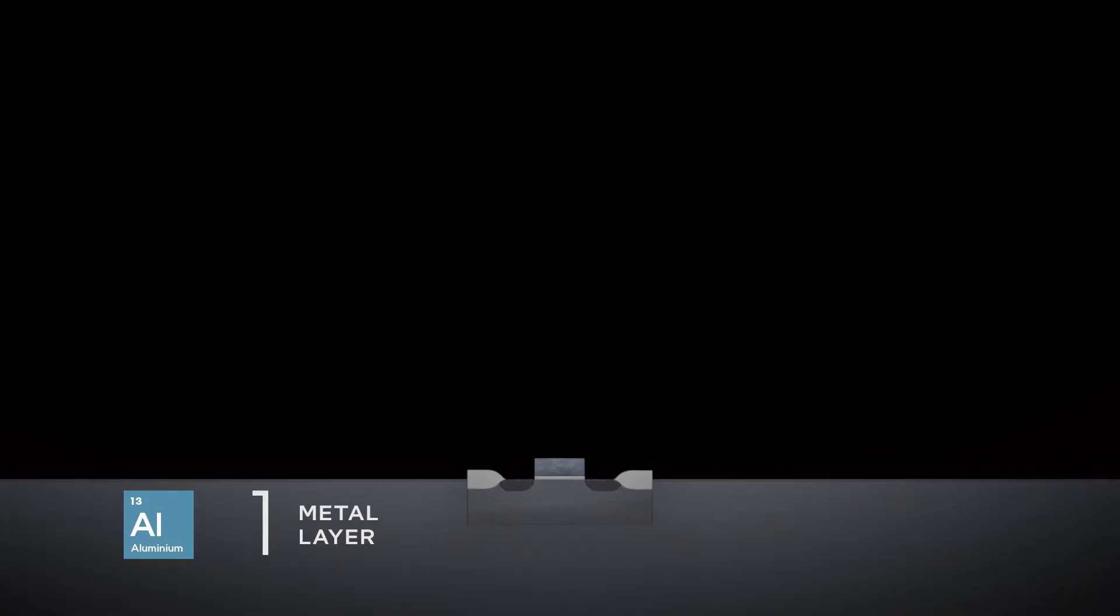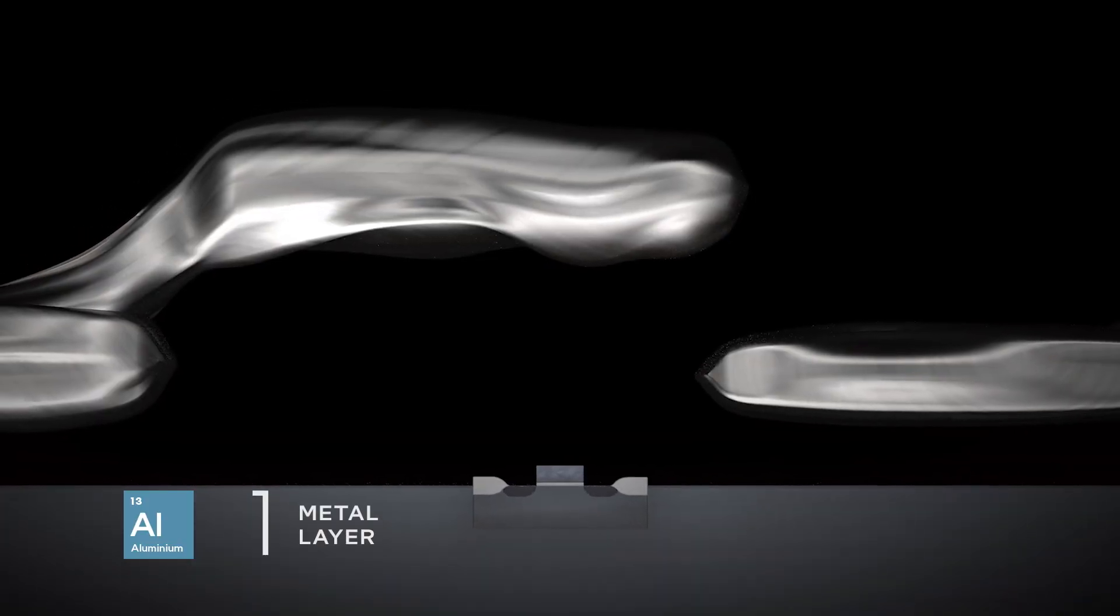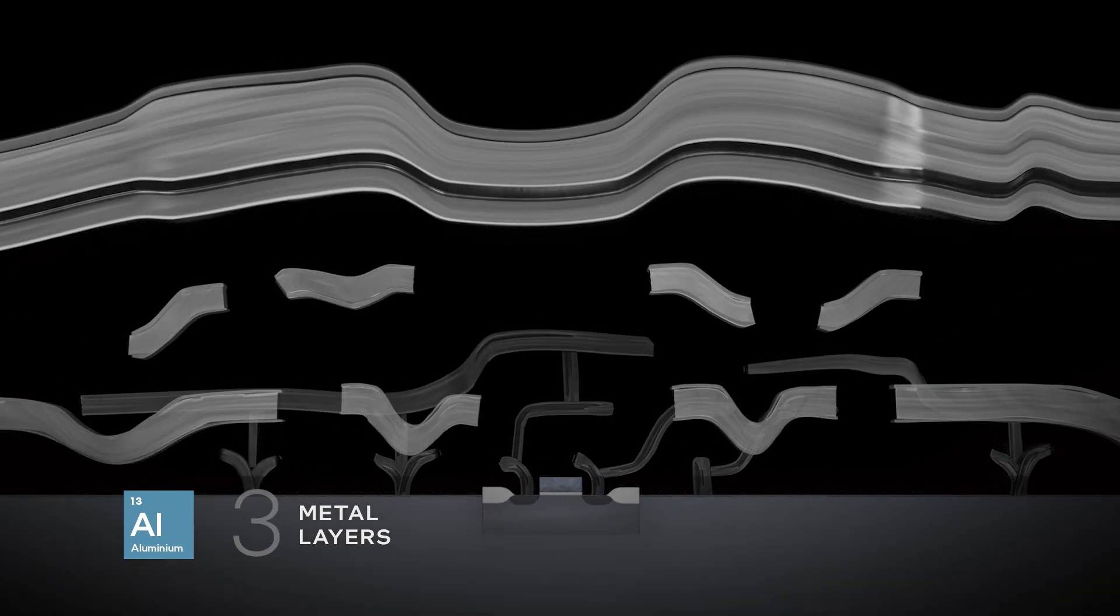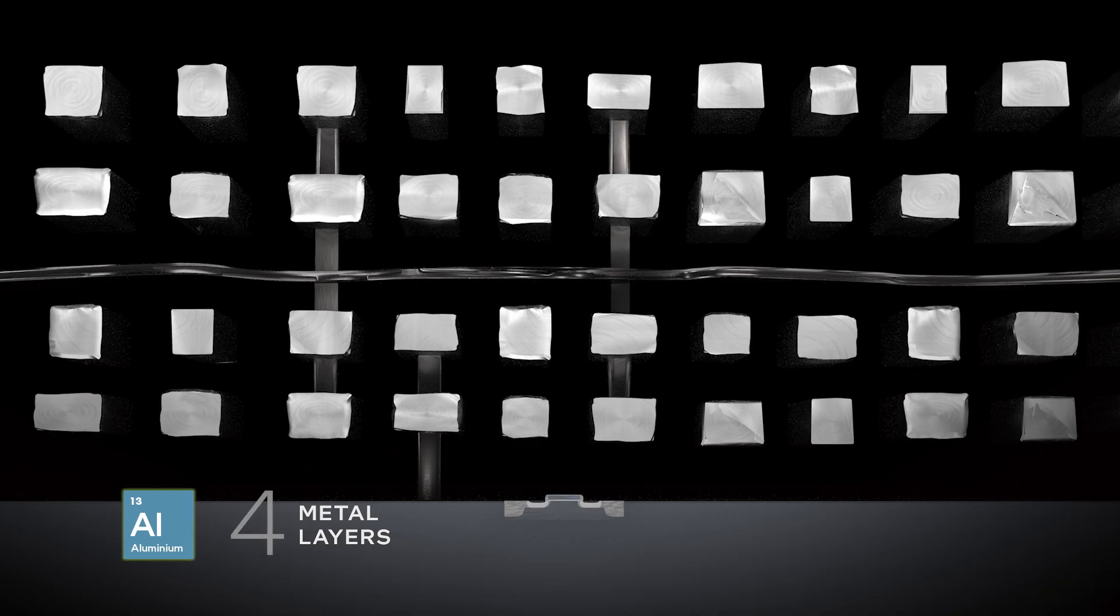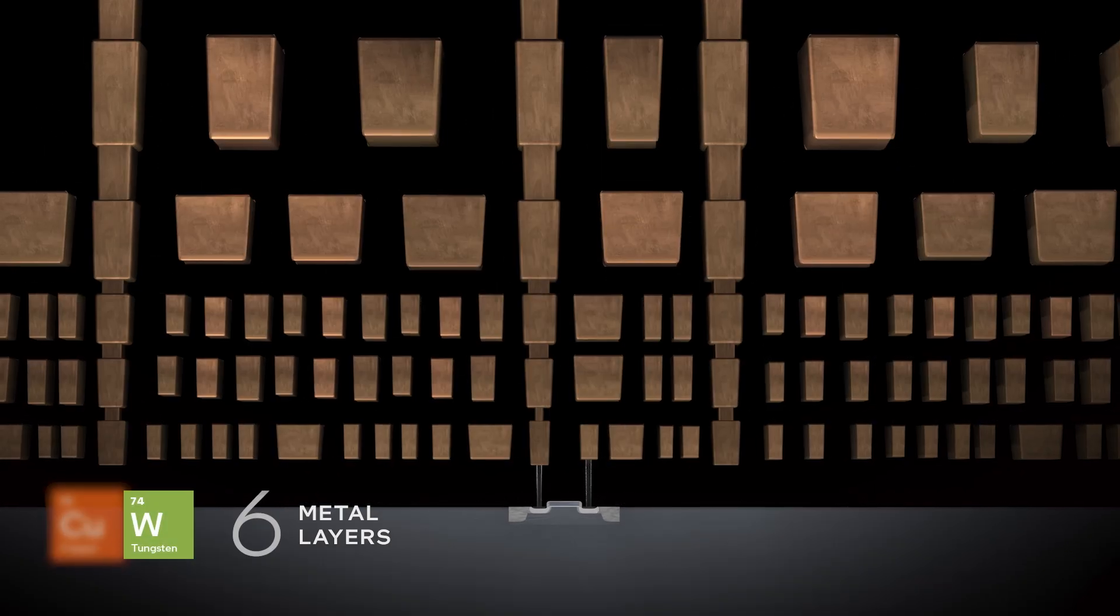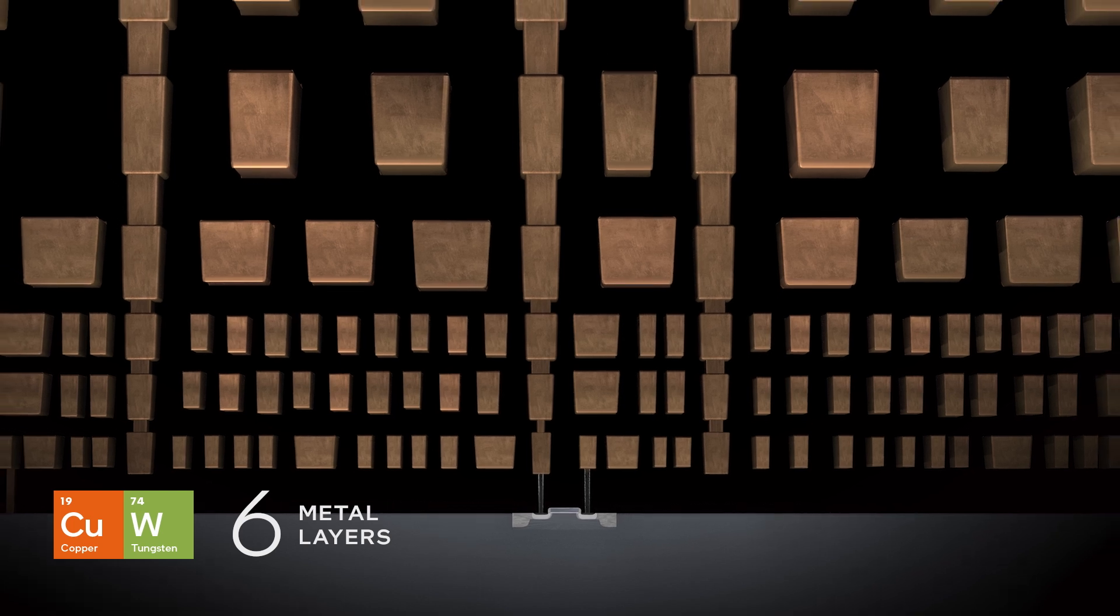By this point, the wires that brought power in and moved signals around had grown from a single layer on top to six layers in order to feed all the small transistors. And we switched from aluminum to copper so they were more conductive.